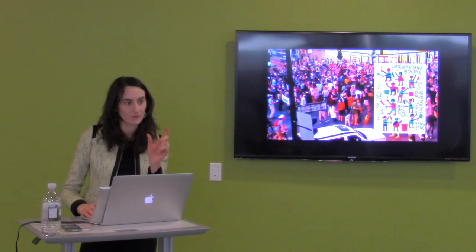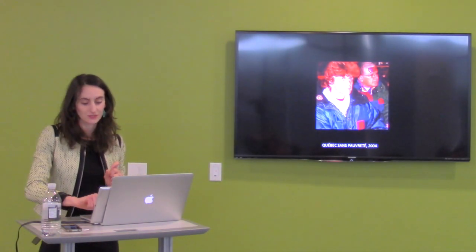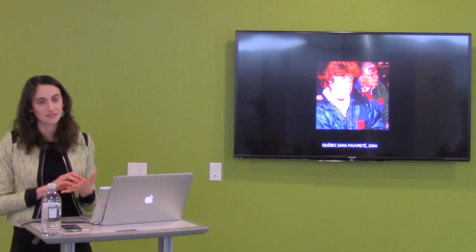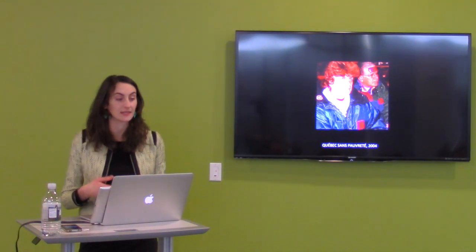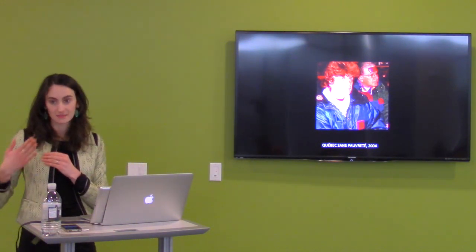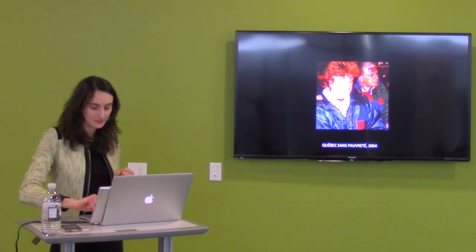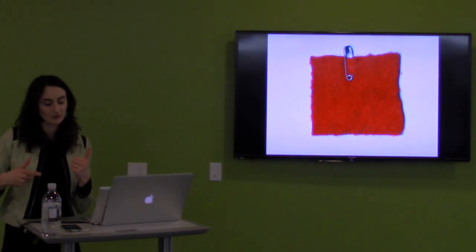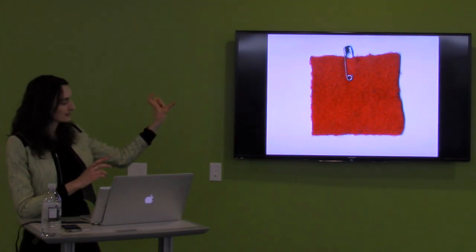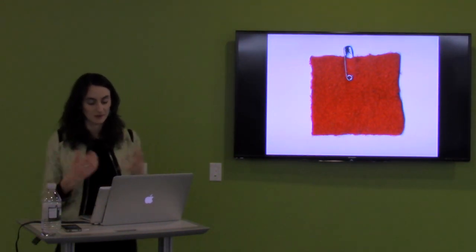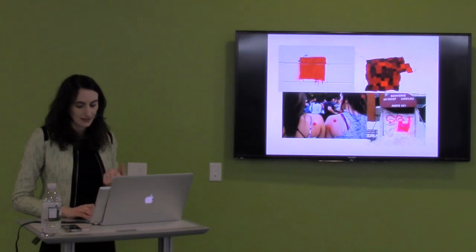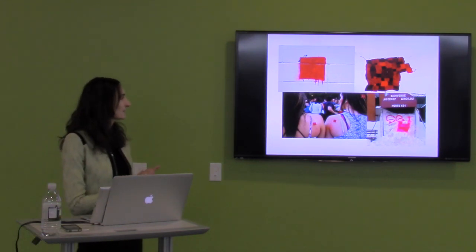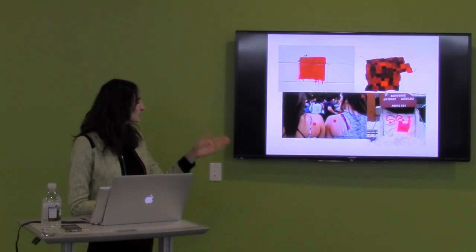Going back to the visual form of the red square, its first iteration appeared in 2004 in a meeting organized by the community organization Quebec sans pauvreté — Quebec without poverty — in the form of red tape put on clothes. This sign was taken up by student associations that created a felt and pinned version that became the iconic sign of the strike, quickly proliferating and materializing on innumerable surfaces in the city: walls, snow, and steam.